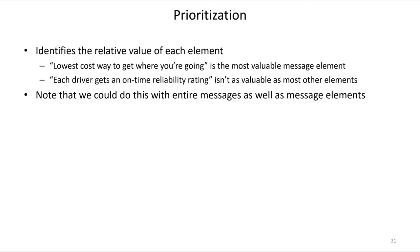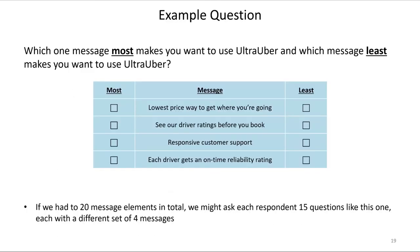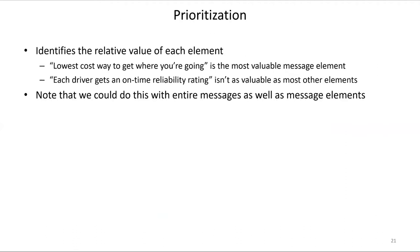We get the relative value of each element — which is most important, which is least important, and everything in between. Note that max diff can also be used when studying entire messages, not just elements. If each of the items tested were a short sentence instead of a single phrase, we could just as easily do it with max diff. Even one- or two-sentence descriptions can be tested with max diff, and we do that all the time.